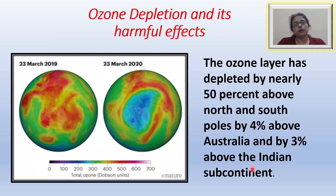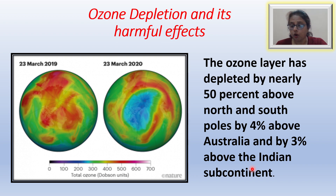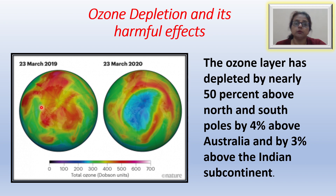Now let us learn about ozone depletion and its harmful effects. This highly useful ozone layer in the stratosphere has been threatened by human activities. This layer is very vital for human life. A study based on data from satellites shows a substantial decline of ozone around the earth. The ozone layer has depleted by nearly 50% above the north and south poles, by about 4% around Australia, and nearly 3% above the Indian subcontinent.